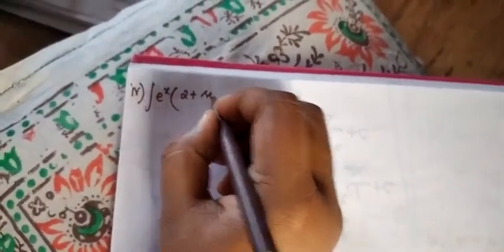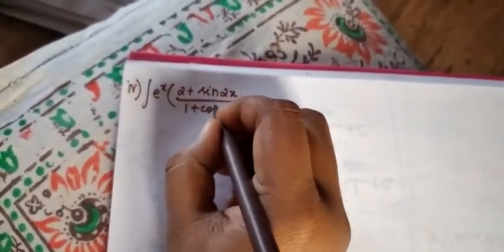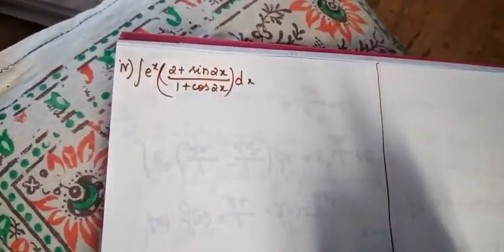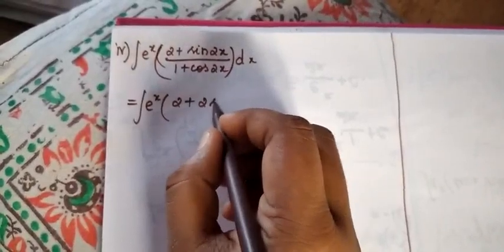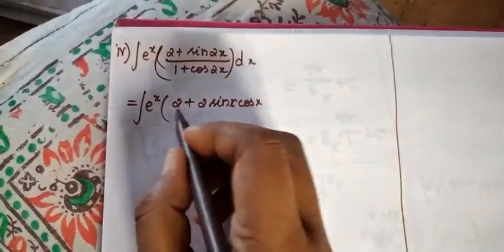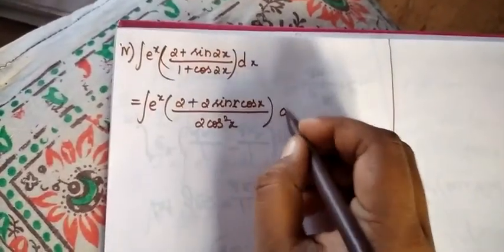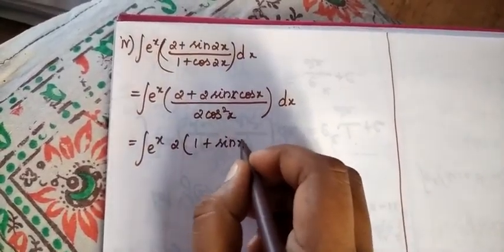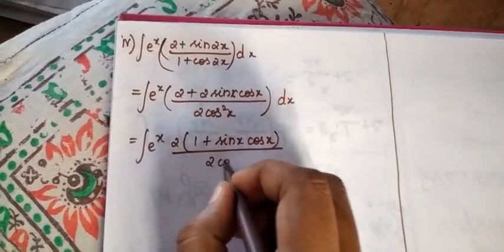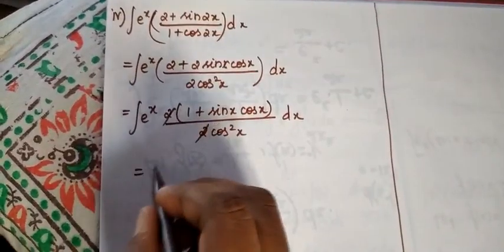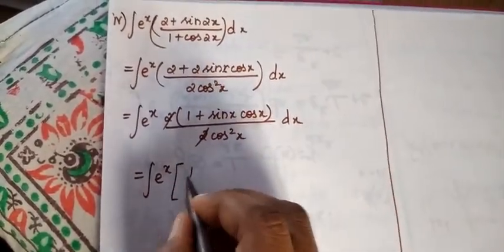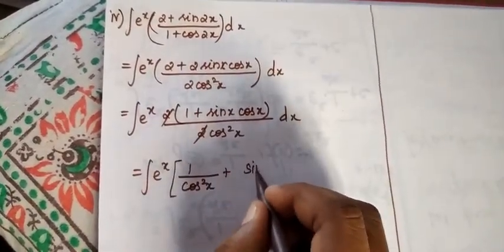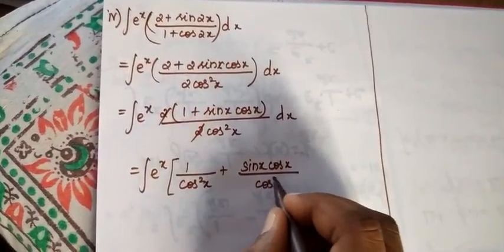Our fourth problem is integral eˣ (2 plus sin 2x) divided by (1 plus cos 2x) dx. We take 2 outside and rewrite using double angle identities, giving integral eˣ times (1 plus sin x cos x) divided by 2cos²x dx. After canceling, we split into 1 divided by cos²x plus sin x divided by cos x, all times dx.